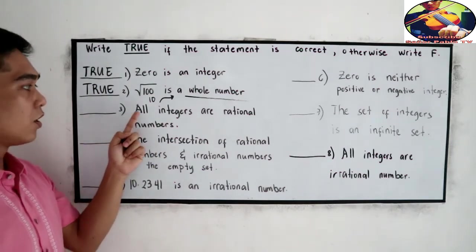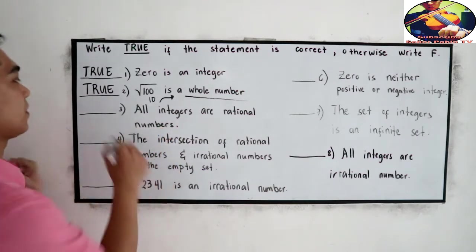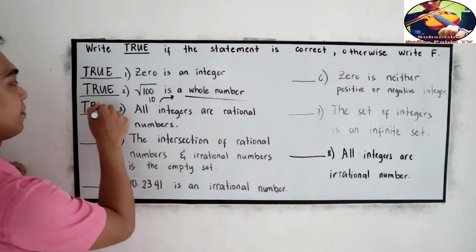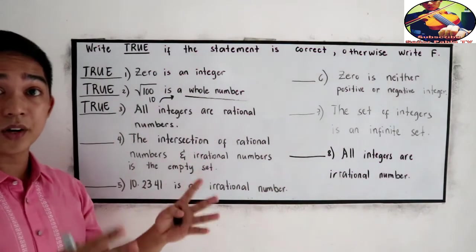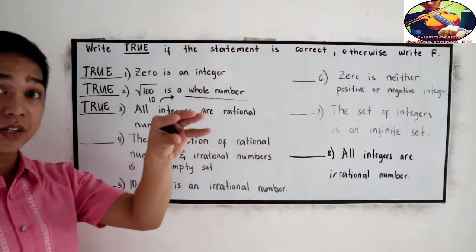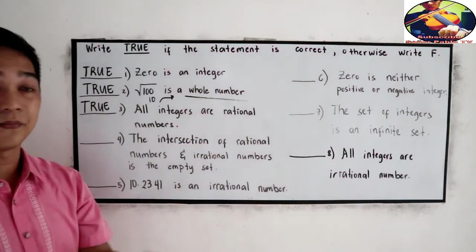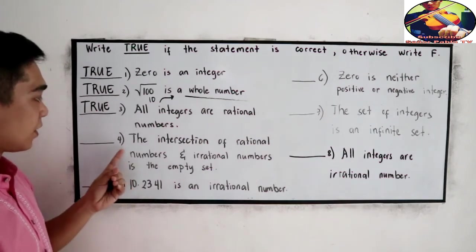Number 3, all integers are rational numbers. The answer is true. If you remember our tree diagram, under the rational numbers we have the integers, whole number, and the counting numbers.